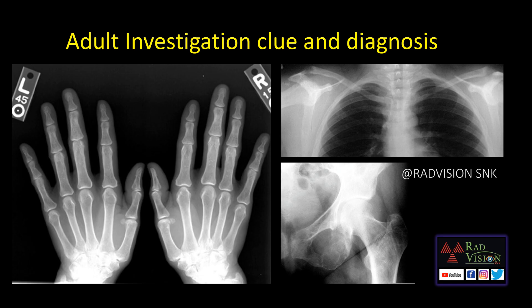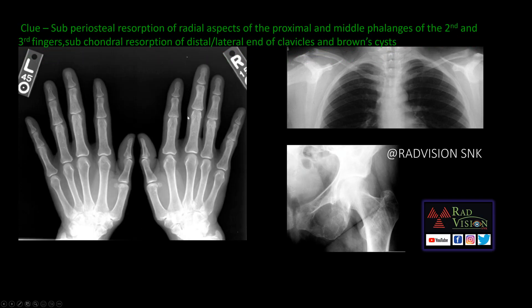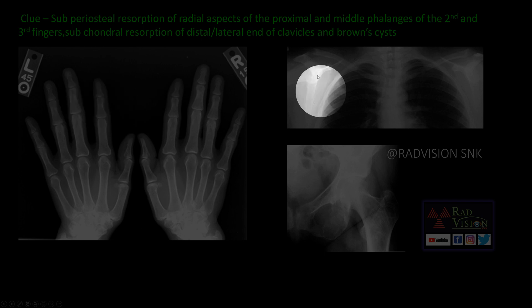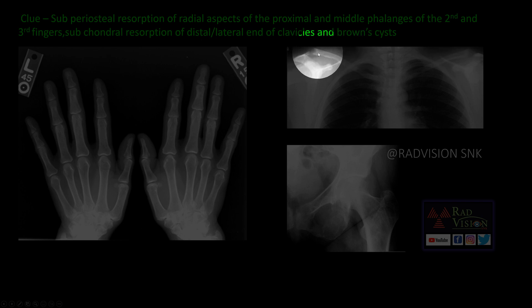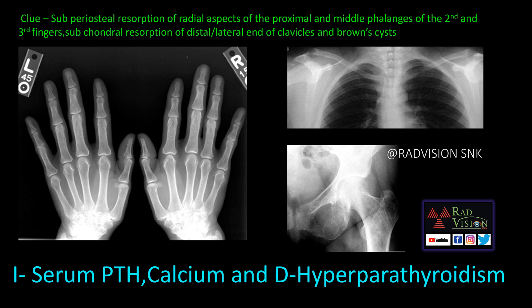Second case: an adult. We will try to see the findings, identify the clue, and come to a conclusion based on investigation. In this case, you can clearly see typical subperiosteal resorption of the radial aspect of the proximal and middle phalanx of the second and third fingers. There is also subchondral resorption of the lateral ends of the clavicles and brown tumors. The investigation is serum parathyroid hormone and calcium correlation, and the diagnosis is hyperparathyroidism.